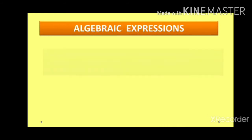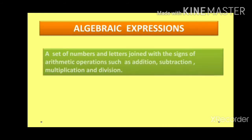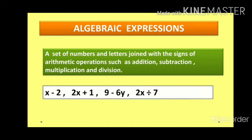So algebraic expressions — we can say a set of numbers and letters, where numbers are the constants and letters are the variables, joined with signs of operations. That is the operators: plus, minus, multiplication sign, division sign. These are some of the examples for an algebraic expression.